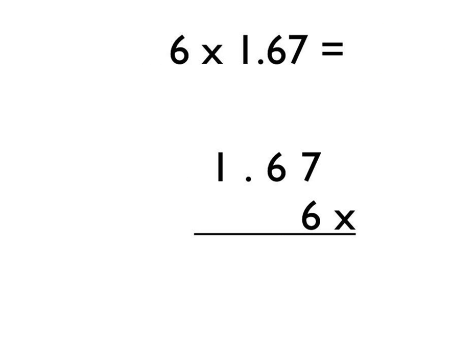I want to look at one final example, to show how you can use short multiplication to multiply a number between 2 and 9 by a decimal number. The rule you must remember is: the decimal number must always go on the top, even if it's smaller than the whole number. Here, 1.67 is smaller than 6, but as it's the decimal number, it must always go on top. Make sure you put your decimal point in the answer directly under the decimal point in your workings.